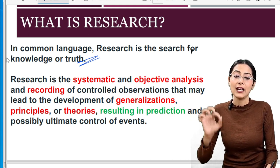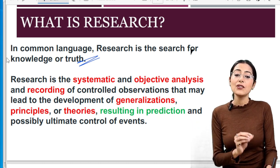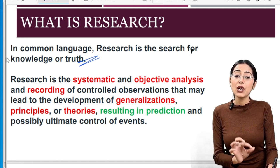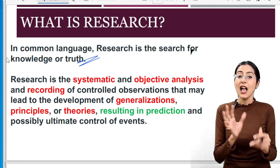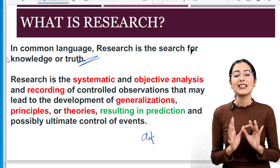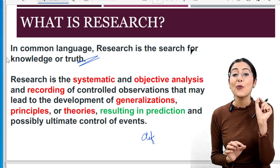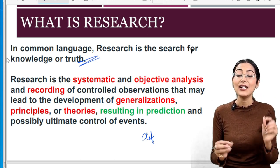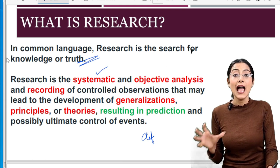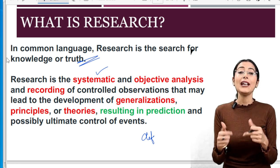Research is the systematic, objective analysis and recording of controlled observations that may lead to the development of generalizations, principles, and theories resulting in prediction and possibly ultimate control of events. We are not learning this like class 10th — you will have to choose the key words of this definition because these are the key words your exam questions are based on. Research is a systematic process.